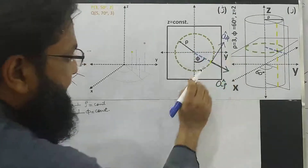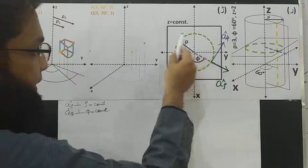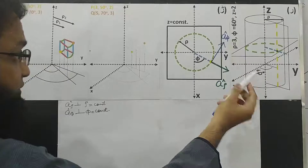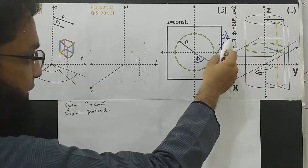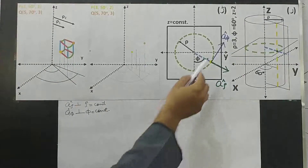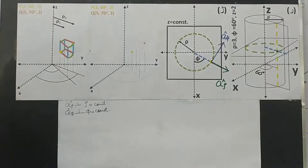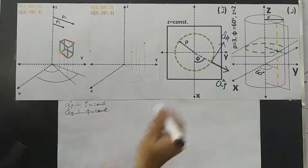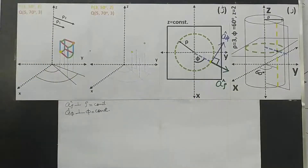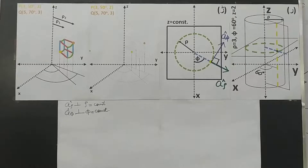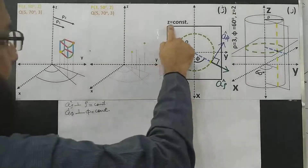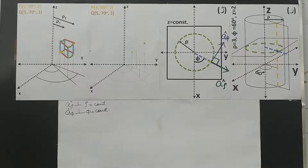If I move in the direction of the tangent, rho will not change — as it should not change, because we are defining a unit vector in the direction of phi, in whose direction only phi should change and nothing else. So it is clear now that we have a 90-degree angle between a_rho and a_phi. Secondly, both exist on the horizontal z equals constant plane. We discussed this in the previous class.